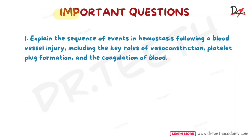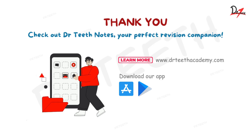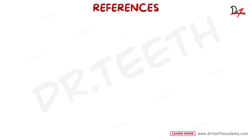An important exam question from this topic: explain the sequence of events in hemostasis following a blood vessel injury, including the key roles of vasoconstriction, platelet plug formation, and coagulation of blood. I hope you found this video helpful. For more helpful videos, download the Dr. Teeth app and enroll in our prime courses, where we have covered many videos like this and you can also access Dr. Teeth notes. Till we meet next time, take care.